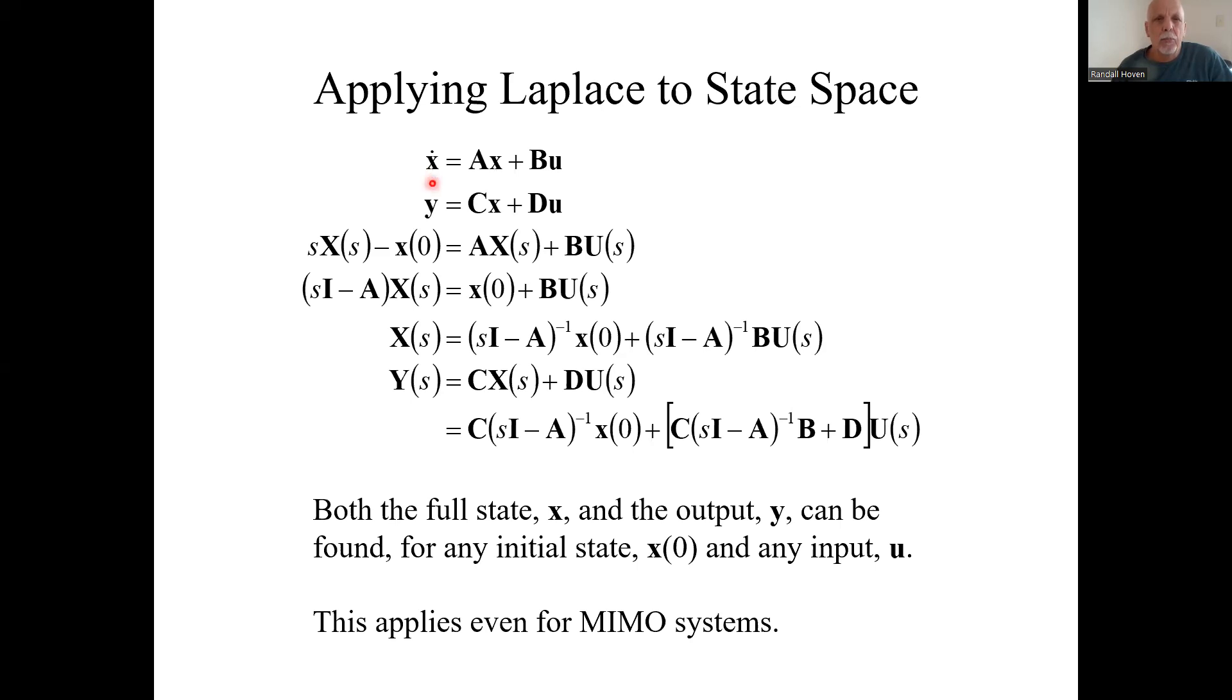If I take the Laplace transform of this first equation, there's a derivative, so that means in the Laplace domain, s times Laplace transform of x minus its initial condition, x times 0. That equals A times the Laplace transform of x plus B times the Laplace transform of u.